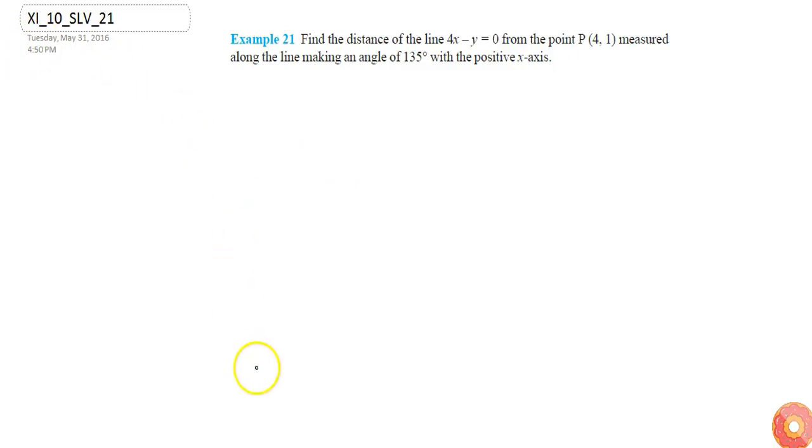First, let's draw the given information so it would be easier to understand this question. This is the Cartesian plane - here is the X axis and Y axis, and here the point (4, 1).